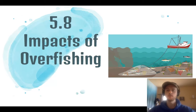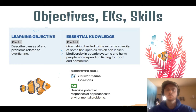Hey everybody, it's Mr. Smedes and today we'll be covering topic 5.8: the impacts of overfishing. We'll focus on impacts as they relate to environmental problems like biodiversity decline, but also economic problems such as income loss and tourism loss. Our objective is to describe the causes and problems associated with overfishing, including biodiversity decline and economic losses, and to practice describing potential approaches or responses to an environmental problem.